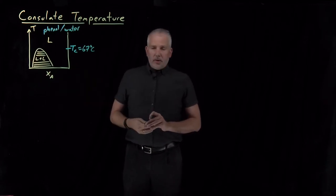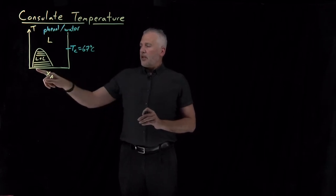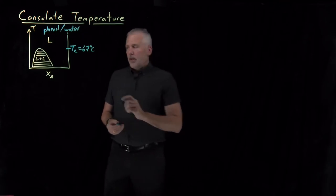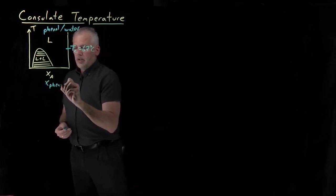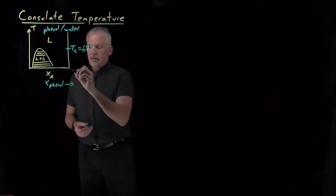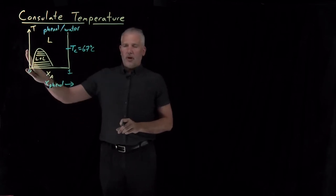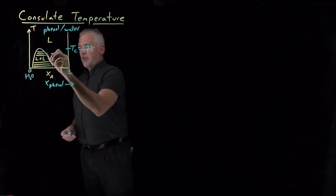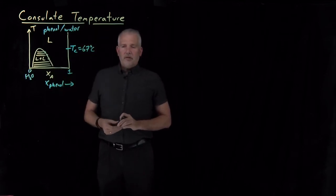That's very typical behavior for immiscible or partially miscible solvents, but it's not the only way these solvents can behave. To understand that, let's think about what these two curves mean on the sides of this miscibility diagram. Let's say this is the case with phenol and water. The mole fraction of phenol is increasing from 0 to 1, so we have pure phenol on one side and pure water on the other. The points on this curve are telling us how soluble one of these solvents is in the other.